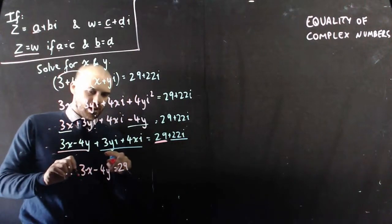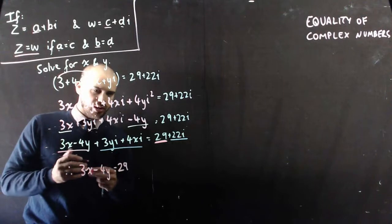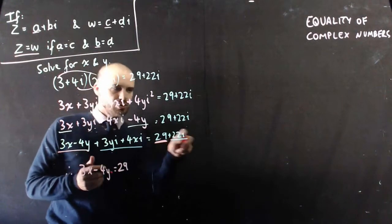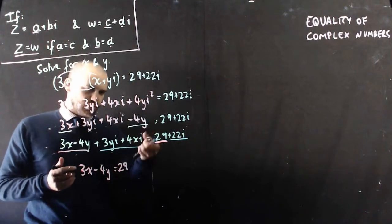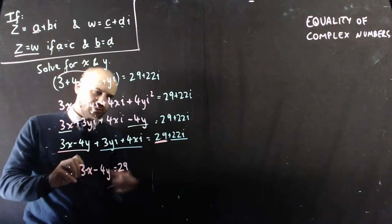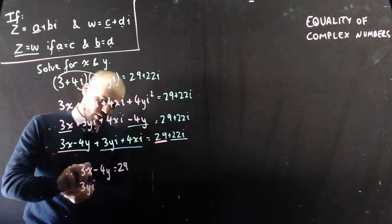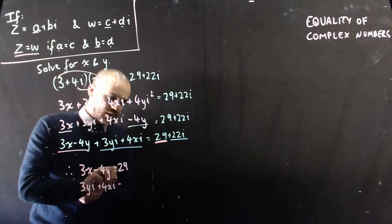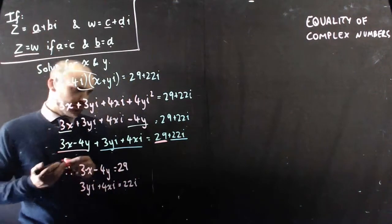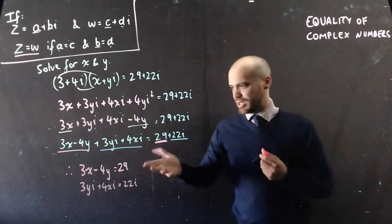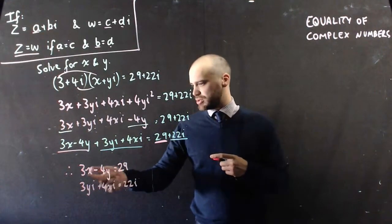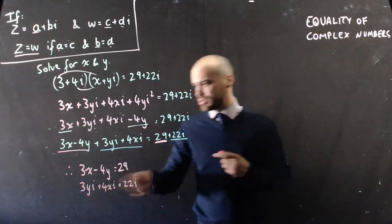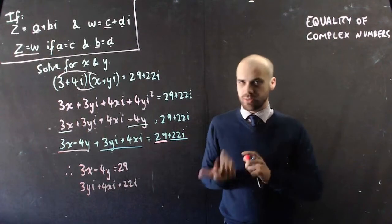And then I have 3yi + 4xi = 22i. Now it almost looks like a simultaneous equation. The only problem is that there's two unknowns here, and there's those i's that seem to be getting in the way.